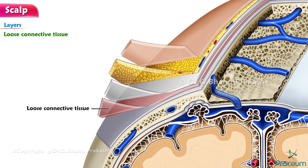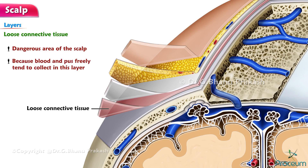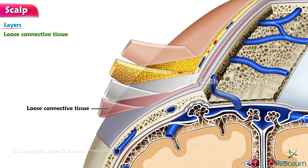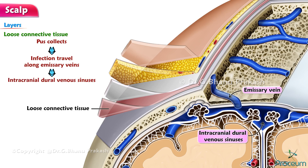Clinical Aspect — Dangerous Area of the Scalp: The layer of loose areolar tissue is called the dangerous layer of scalp because blood and pus freely tend to collect in this layer. If pus collects in this layer, the infection may travel readily along emissary veins into the intracranial dural venous sinuses, leading to their thrombosis, which may be fatal.